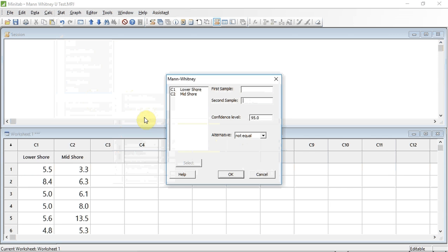I now have to instruct Minitab what variables I want it to analyze. I'm going up to first sample and selecting that box. It's the lower shore sample I'm going to place in there, so I select it and press the select button.